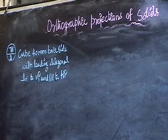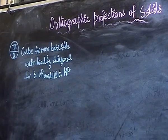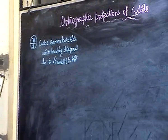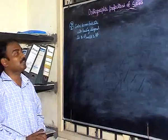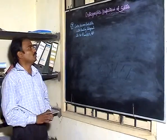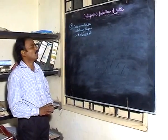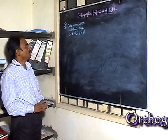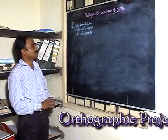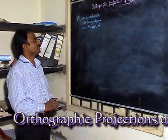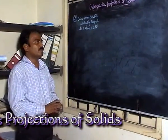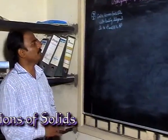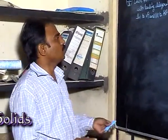Now we are going to see the orthographic projection of solids — it is an entirely different approach. I have only one problem in hand and I am going to explain the entire concept, covering one unit within one problem. Let's be a little slow and try to understand the basics. It is basically a two-inclination problem, though normally one inclination is sufficient.